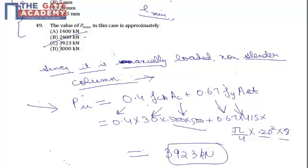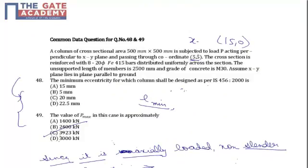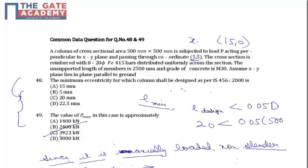This comes out as 3923 kilonewtons, so it is a straightforward question. The only confusing factor might be that since the load is acting at some eccentricity (5, 5), why are we designing it as an axially loaded column? Because as per the recommendation of IS 456, it passes the criteria for an axially loaded column, which states that e_design should be less than 0.05 times D — that is, 20 should be less than 0.05 into 500, meaning 20 is less than 25 — making it an axially loaded column.